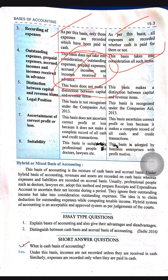Regarding capital and revenue: in cash basis of accounting, we do not make any distinction between capital and revenue items. But in accrual basis of accounting, we distinguish between capital expenditure and revenue expenditure, and between capital items and revenue items.